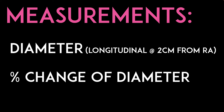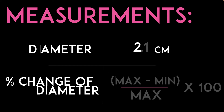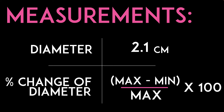Most of the time I just eyeball it to say if it's high or low, but you can measure the actual numbers. The typical way it is reported — especially in the cardiology literature — is a diameter less than 2.1 centimeters or greater than or equal to 2.1 centimeters, and then the percent change or collapse is: max minus minimum over maximum times 100. This is the most common formula, but make sure whatever study you're reading uses this same one, as there are two different ways some studies measure it.